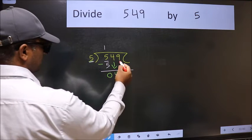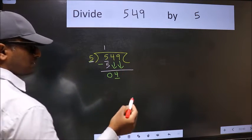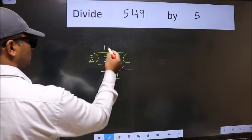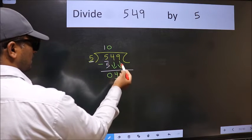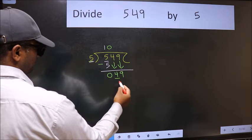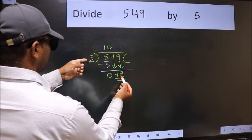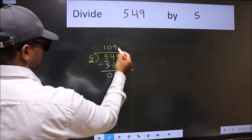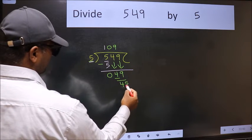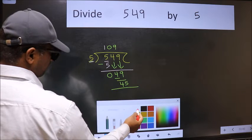And the rule to bring down the second number is we should put 0 here, then only we can bring this number down. Now 49. A number close to 49 in the 5 table is 5 nines, 45. Now we should subtract.